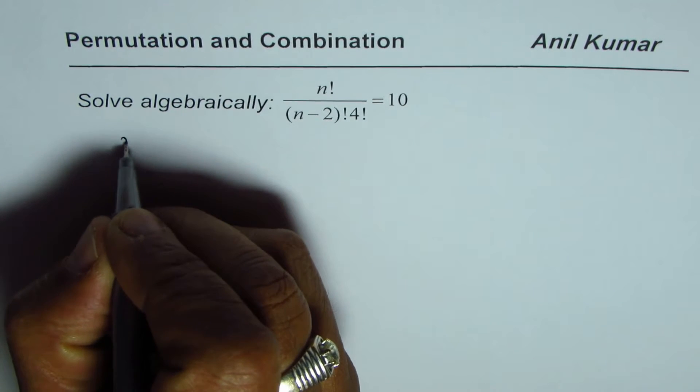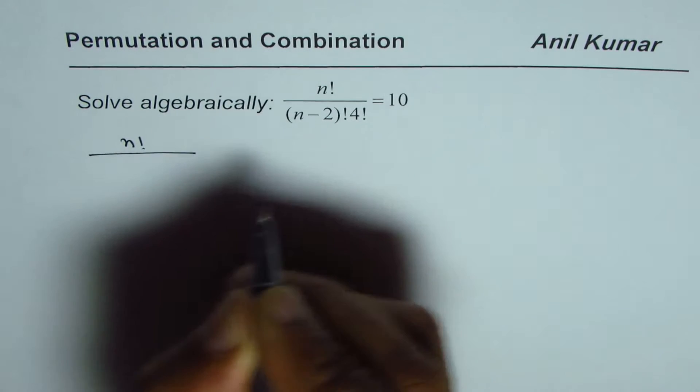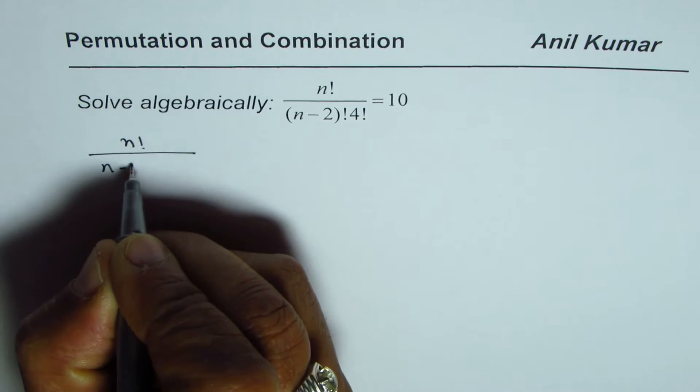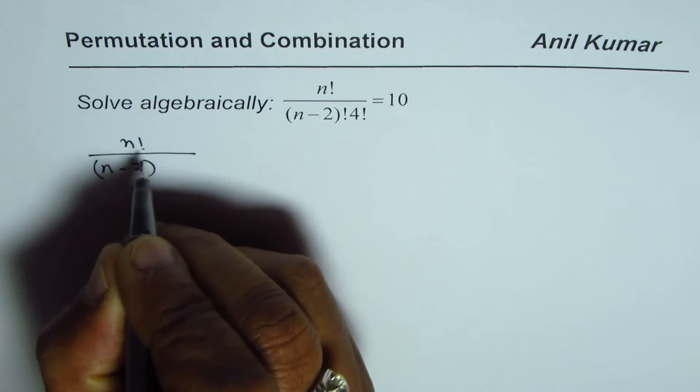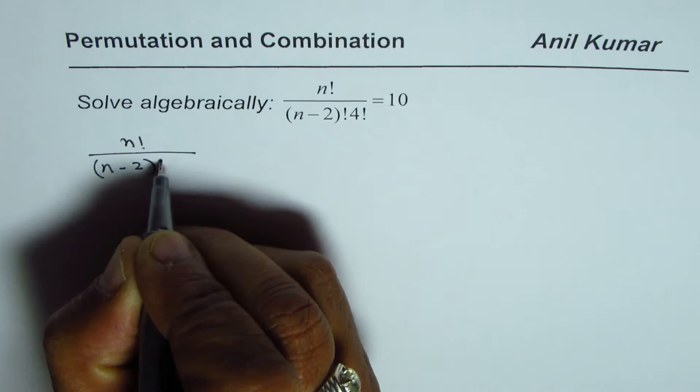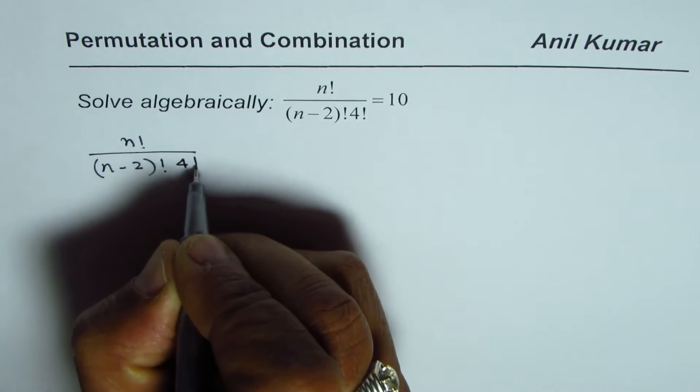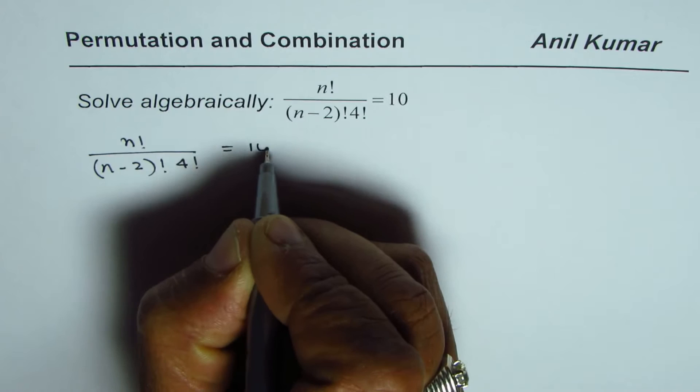Let's rewrite this particular equation and simplify it. The equation given to us is n factorial divided by n minus 2 factorial times 4 factorial equals to 10.